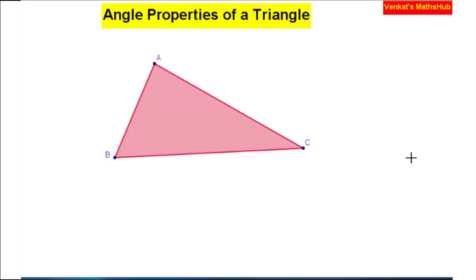There are three angles: angle A, angle B, and angle C. And there are three sides: AB, BC, and CA. These are the three interior angles of the triangle — angle A, angle B, and angle C.